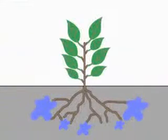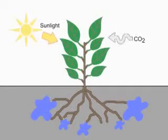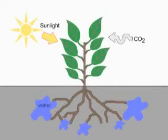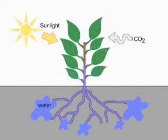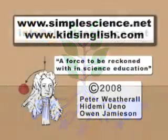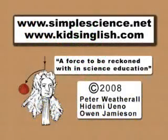For most plants, photosynthesis occurs in the leaves. During the daytime, leaves absorb carbon dioxide and sunlight. Water is absorbed through the roots and transported up the stem to the leaves in special pipes called xylem.